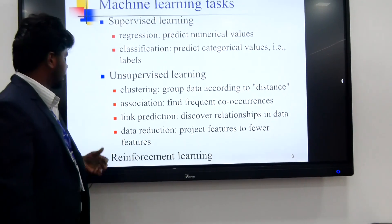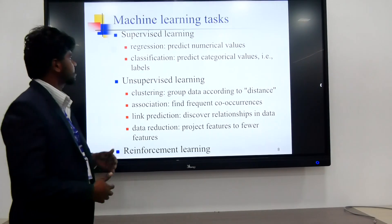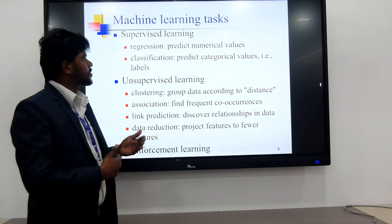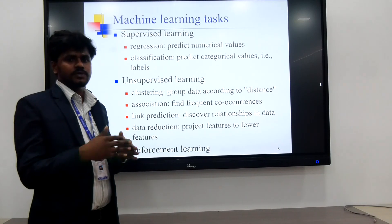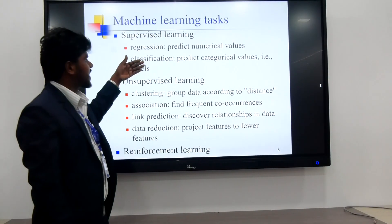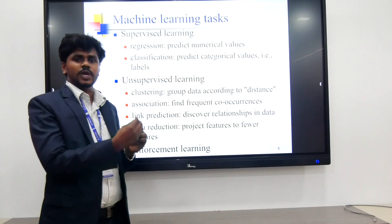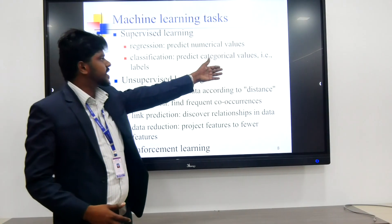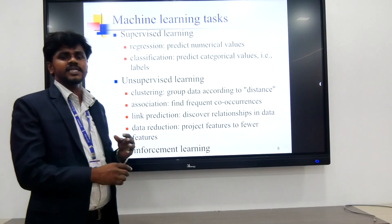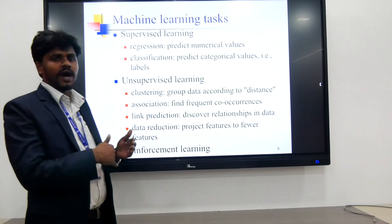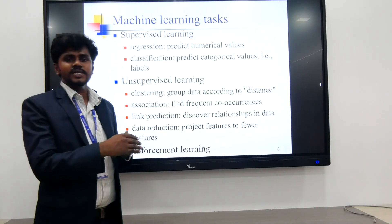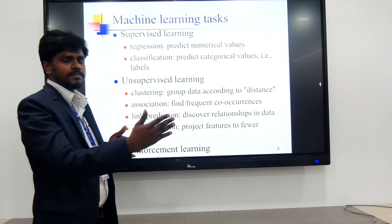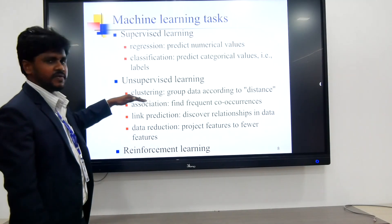Supervised learning includes regression and classification. Regression means predicting numerical values. Classification classifies a group of people into the same category — same data. It predicts category values: which category is the same category. For example, all males are one category, and females are another category. These are different labels, and supervised learning classifies one label from another.